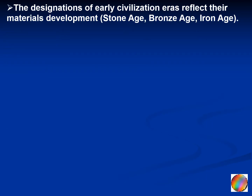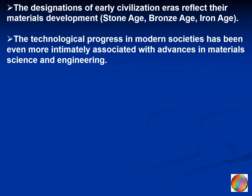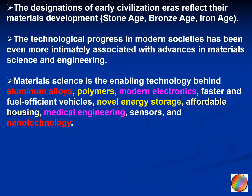The designations of early civilization eras reflect their materials development — the stone age, the bronze age, the iron age are all connected to specific materials. The technological progress in modern societies has been even more intimately associated with advances in materials science and engineering. Materials science is the enabling technology behind aluminum alloys, polymers, modern electronics, faster and fuel efficient vehicles, novel energy storage, affordable housing, medical engineering, sensors and nanotechnology.